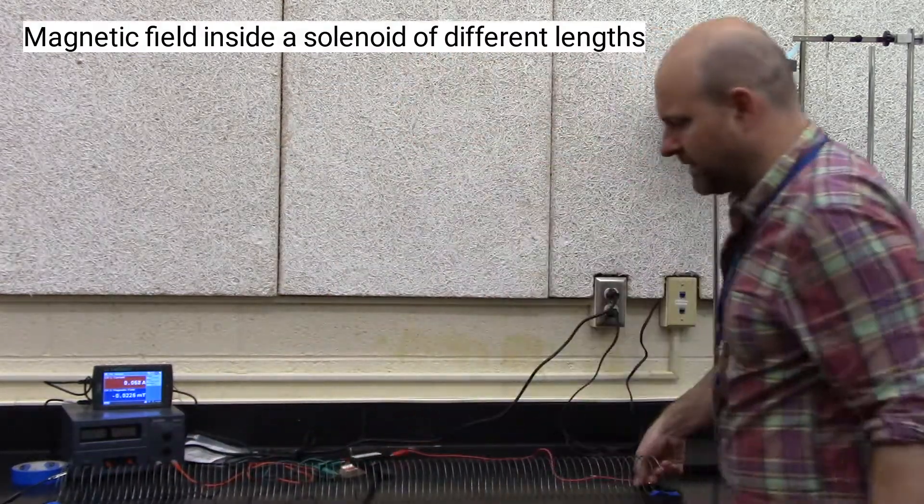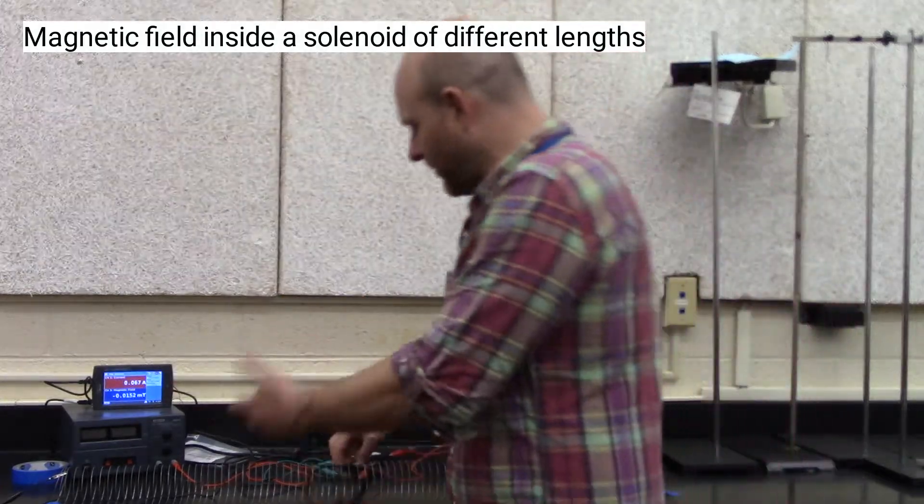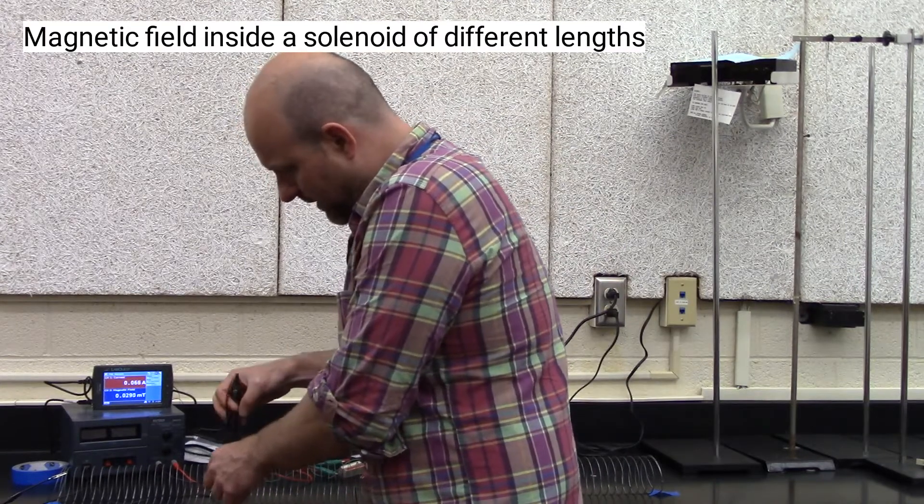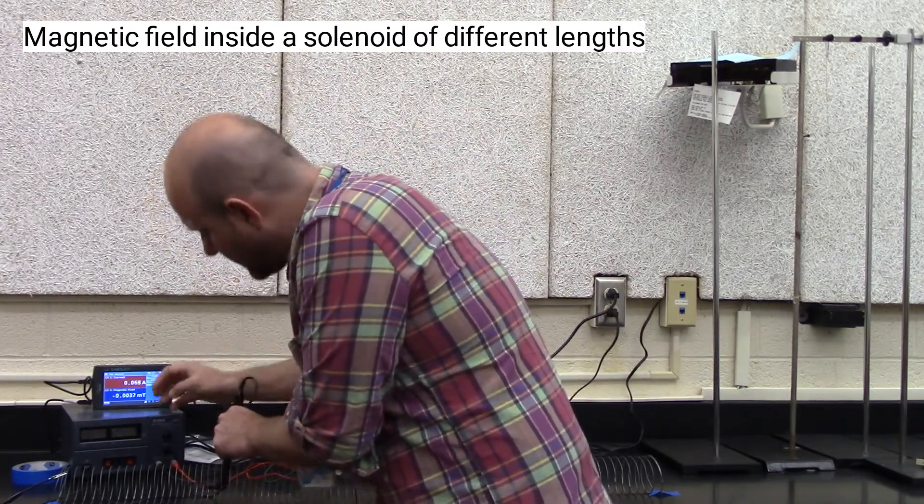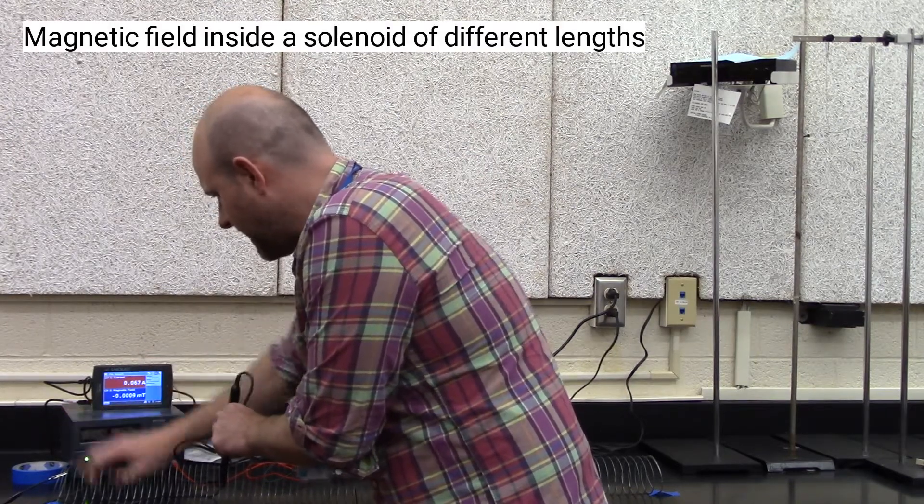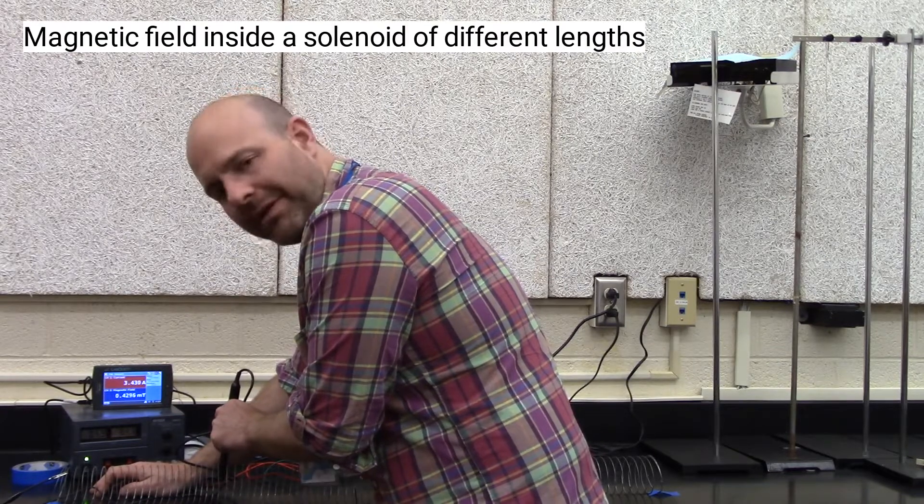I'm going to bring this clip down to the middle. The spacing of the loops is still the same, but now I'm only using about half of them. I'm going to stick my magnetic field sensor in the middle again. Just as I did before, I'm going to zero it out because I don't want the Earth's magnetic field affecting my results. And I'll turn on the field and I get about 0.42 millitesla.